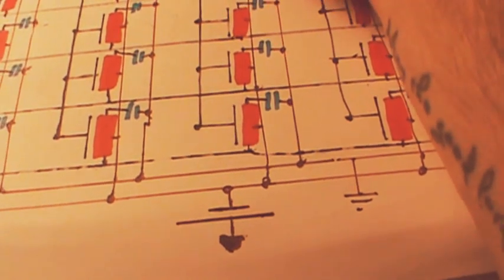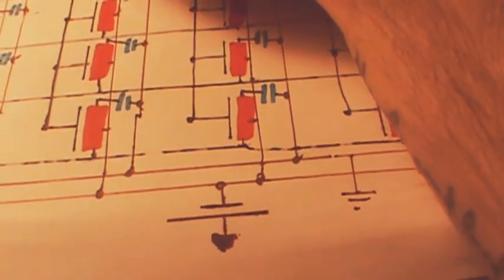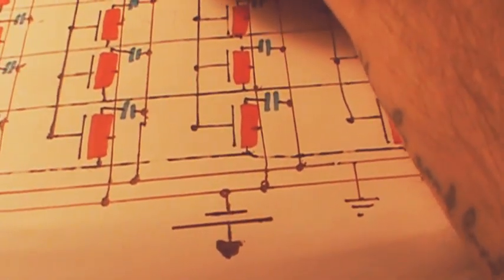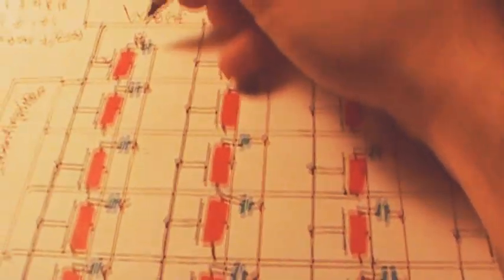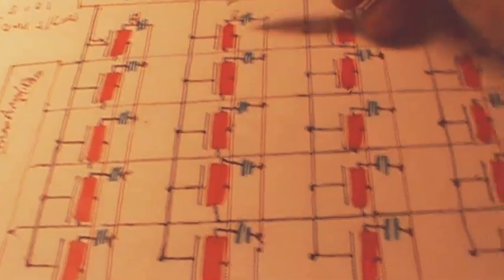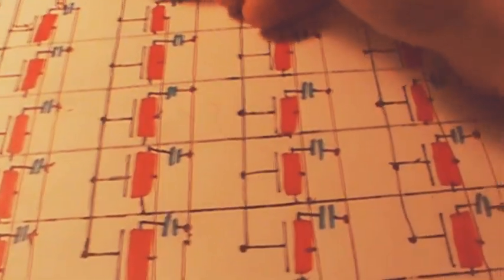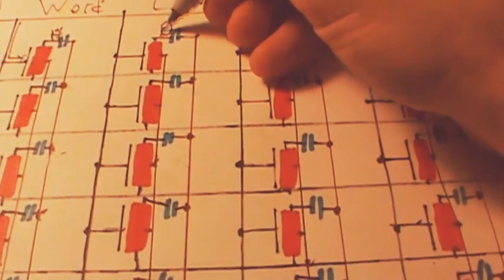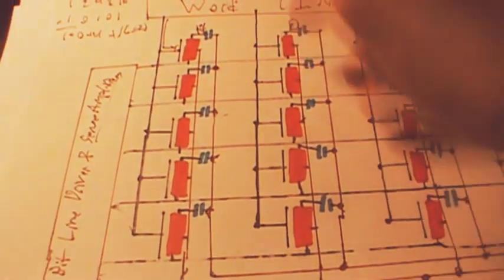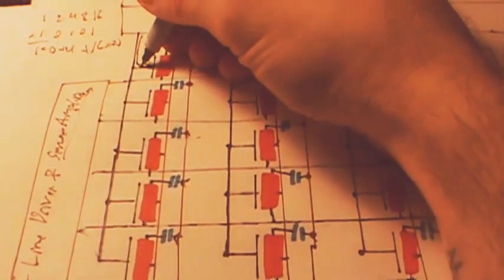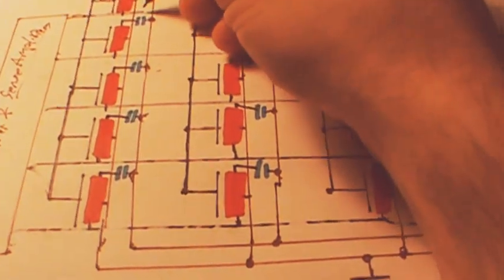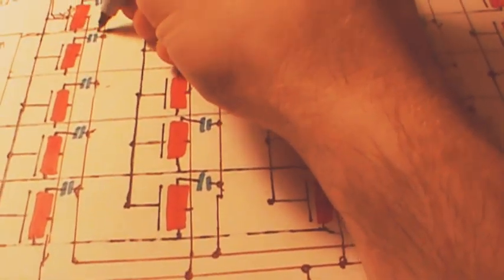When you click the letter V, there's going to be a voltage going into here and it's going to put a high value on this capacitor. And it's going to put a 0 on this capacitor because when you click the letter V there's going to be a high coming here and another high coming here.